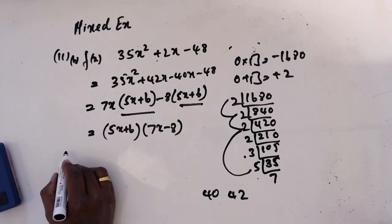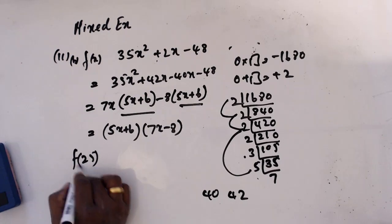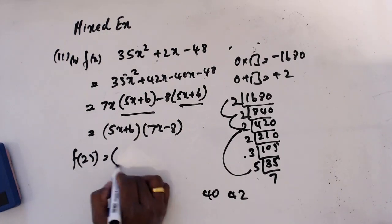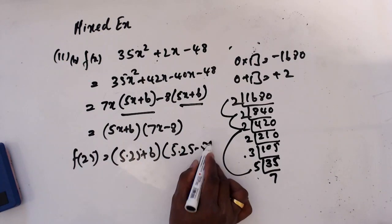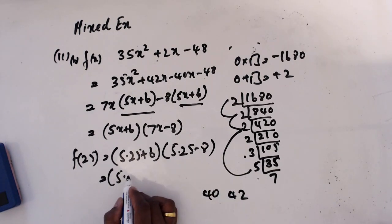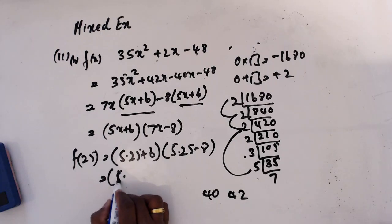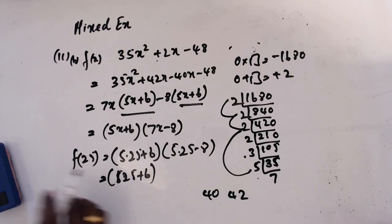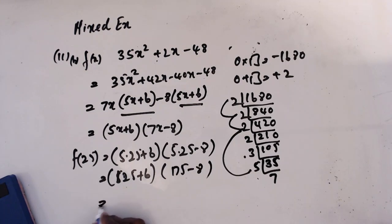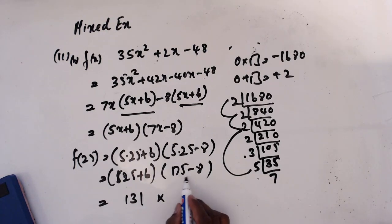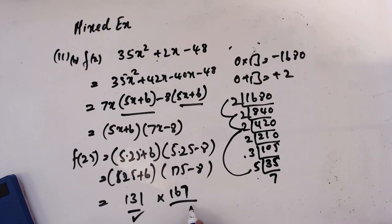Now I'm going to substitute x = 25 into the two factors to verify: (5×25 + 6) and (7×25 - 8). That gives 131 and 167. So is 131 a prime number? Yes. Is 167 a prime number? Yes. So it is written as a product of two prime numbers.